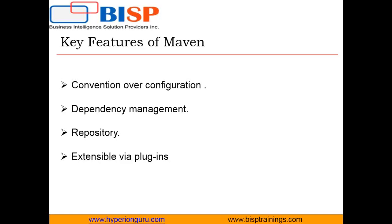The fourth key feature of Maven is extensibility via plugins. Maven's build system is extensible via plugins, which allows keeping the Maven core small. A plugin generally provides a set of goals. Maven plugins are generally used to create JAR files, create WAR files, compile code, perform unit testing, create project documentation, and create project reports.